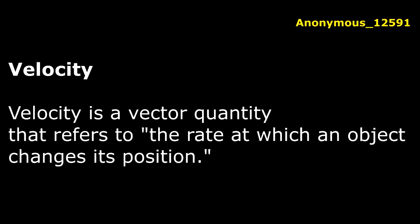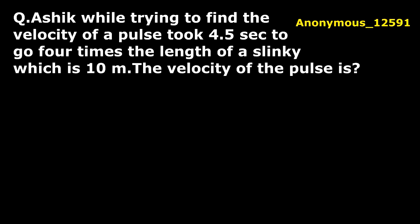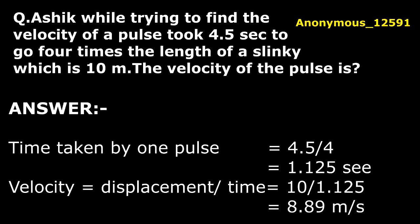Let's discuss one question of velocity. Ashik, while trying to find the velocity of a pulse, took 4.5 seconds to go four times the length of a slinky which is 10 meters. The velocity of the pulse is how much? The answer is: first of all, we have to find the time taken by one pulse, so we are dividing 4.5 by 4 because it is given four times the length of slinky which is 10 meters.